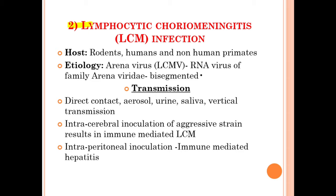Moving on, we will discuss the lymphocytic choriomeningitis infection, also known as LCM infection. The hosts of this disease are rodents, humans, and non-human primates. The etiology is the arenavirus, also known as LCM virus — an RNA virus of family Arenaviridae, and it is a bi-segmented virus. Transmission occurs through direct contact, aerosols, urine, saliva, and vertical transmission. Intracerebral inoculation of the aggressive strain results in immune-mediated LCM, and intraperitoneal inoculation leads to immune-mediated hepatitis.